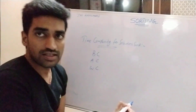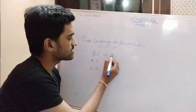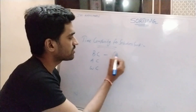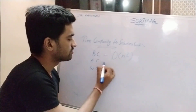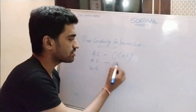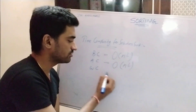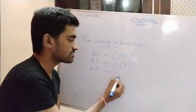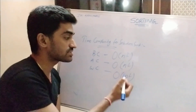So here, the best case time complexity for selection sort is O(n²), average case is also O(n²), and worst case is also O(n²).